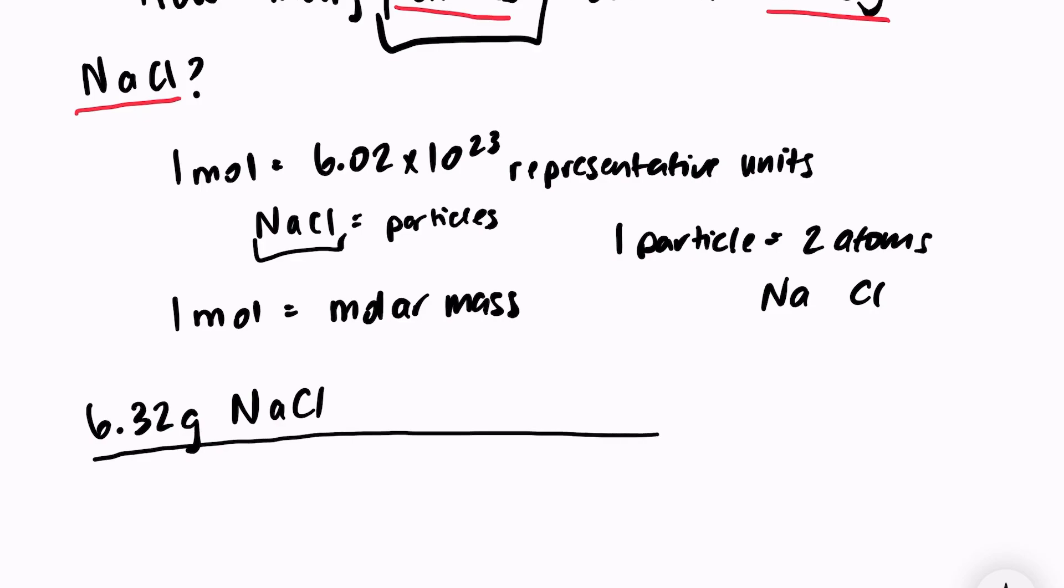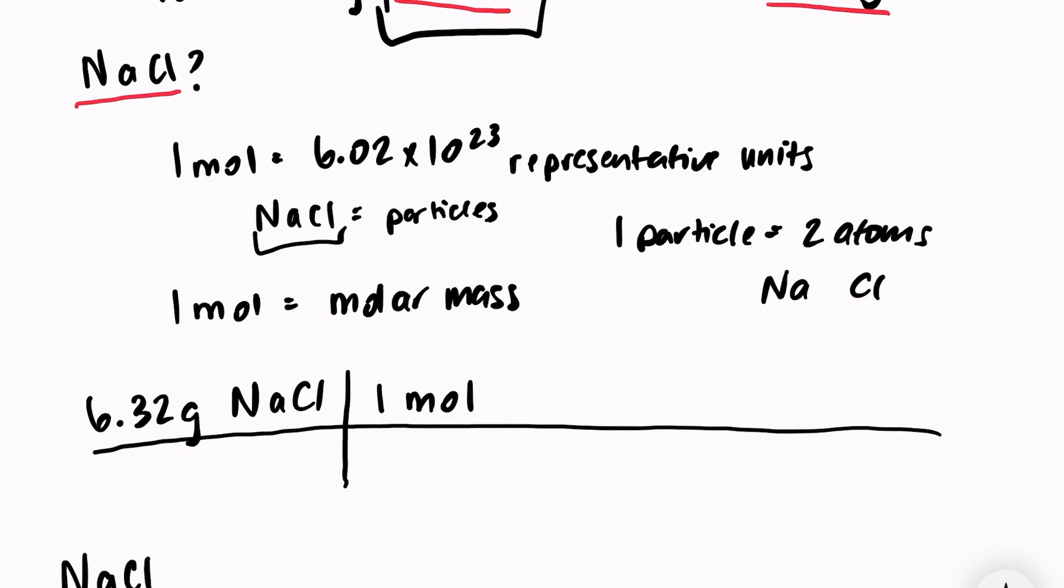So the first thing that I have to do is convert into moles. That will always be the first step. Grams will go on the bottom. One mole will go on the top because I want my grams to cancel out. I need to know how many grams are in one mole of NaCl.